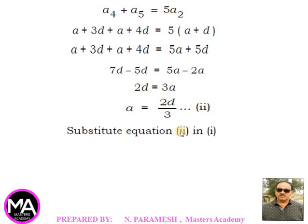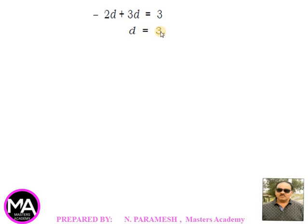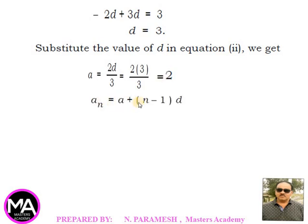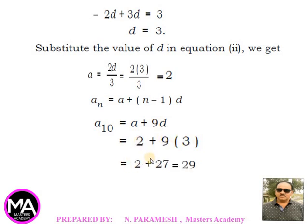Substituting equation 2 into equation 1: -2d/3 + d = 1. Multiplying by 3: -2d + 3d = 3, so d = 3. Then a = 2(3)/3 = 2. Using an = a + (n-1)d, a10 = 2 + 9(3) = 2 + 27 = 29. Therefore the 10th term of the arithmetic progression is 29.